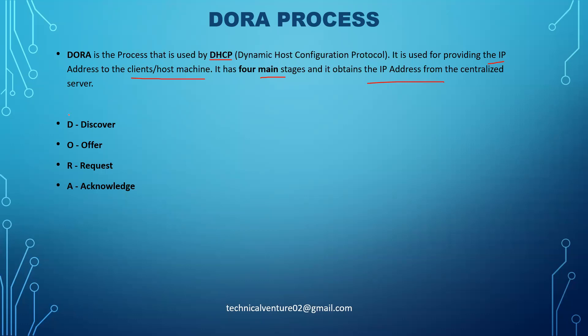DORA has mainly four stages: Discover, Offer, Request, and Acknowledge. That's why we call it the DORA process — D means Discover, O means Offer, R means Request, and A means Acknowledge.